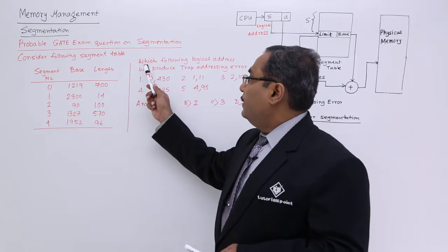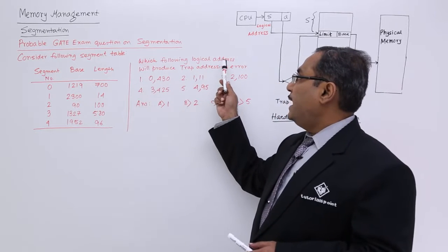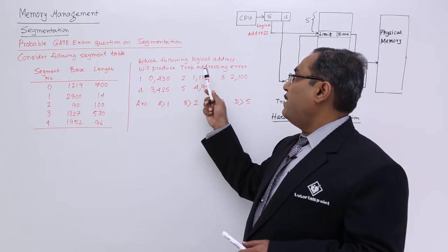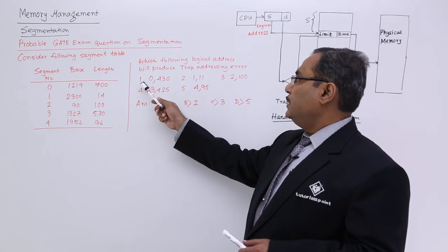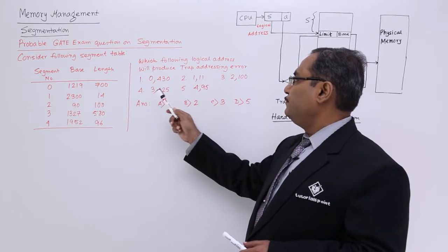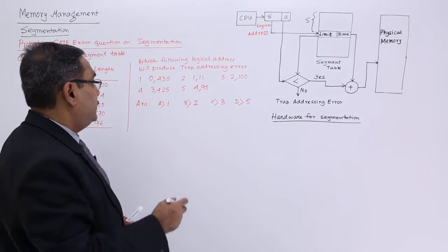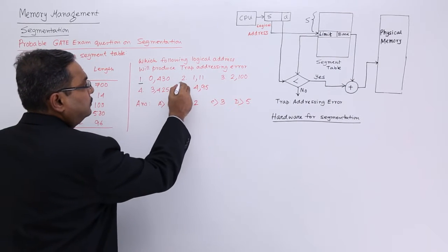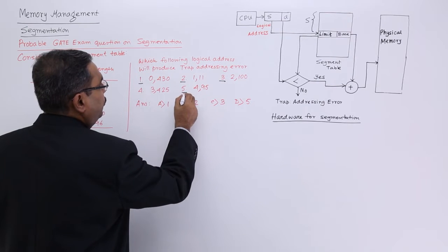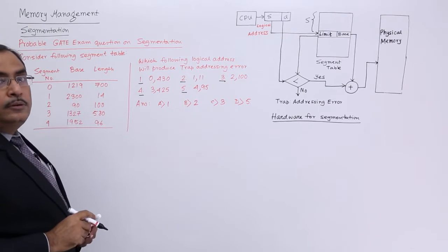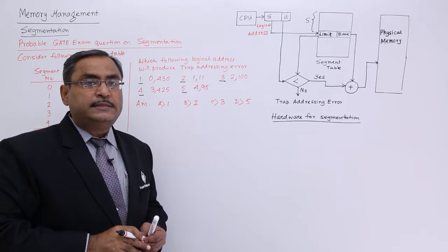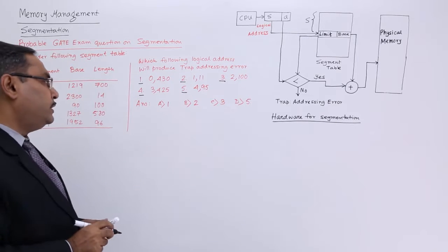Now, what is the problem? Which following logical address will produce trap addressing error? So they have given us five logical addresses. We are supposed to find out which logical address will produce the trap addressing error, that means invalid logical address.